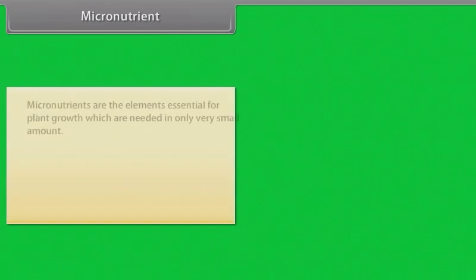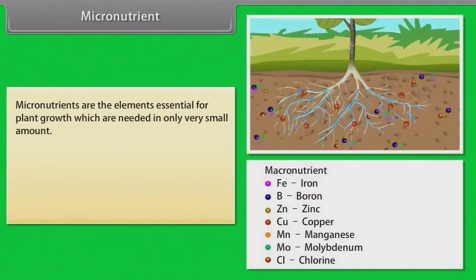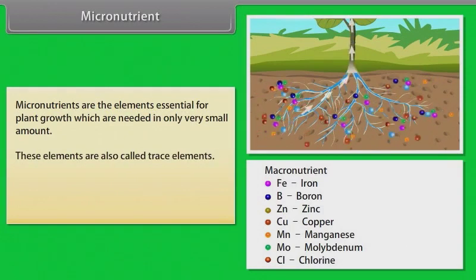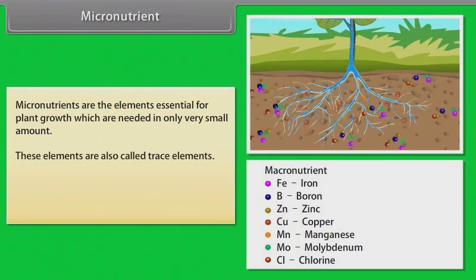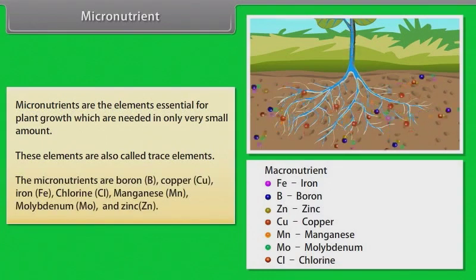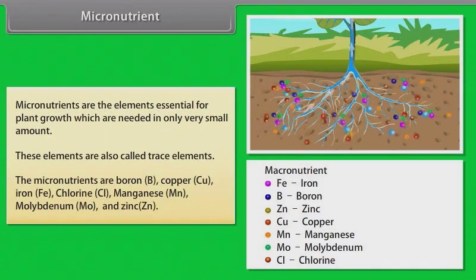Micronutrients are the elements essential for plant growth which are needed in only very small amounts. These elements are also called trace elements. The micronutrients are boron, copper, iron, chlorine, manganese, molybdenum and zinc.